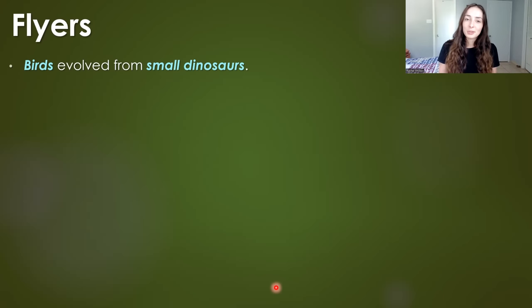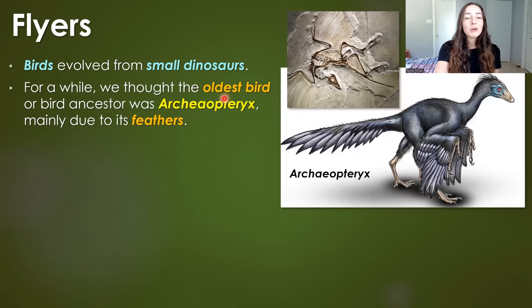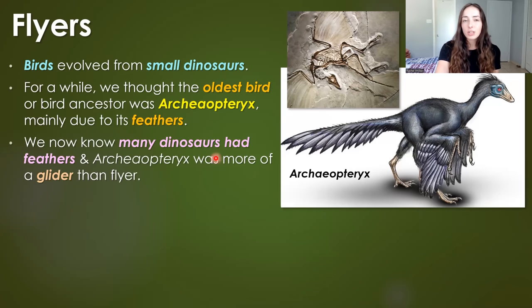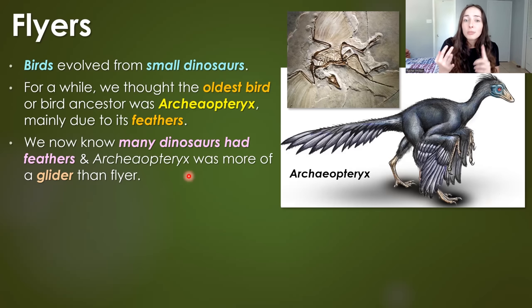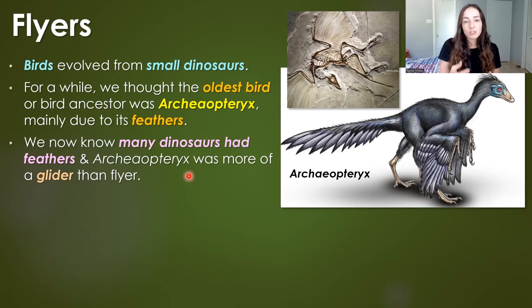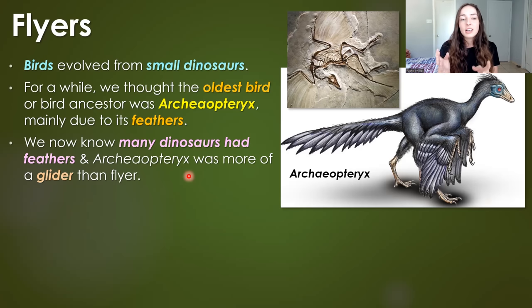Now, the flying dinosaurs — birds. Birds evolved from small dinosaurs. For a while we thought the oldest bird or bird ancestor was Archaeopteryx, as shown in the fossil and reconstruction here, mainly due to feathers found with its fossils. But now we know many dinosaurs had feathers, and that doesn't necessarily make them a bird. We also know that Archaeopteryx was more of a glider than a flyer. Flying is a beneficial trait for predators to see their prey better and for prey to escape predators.